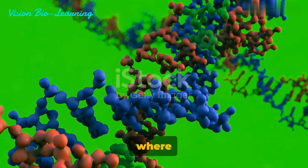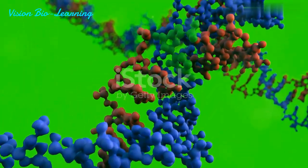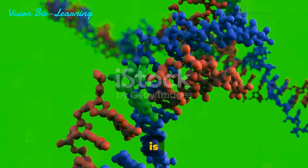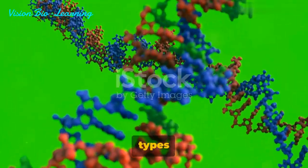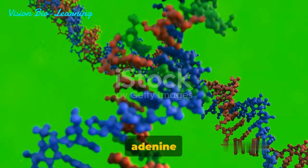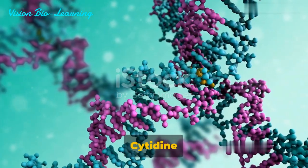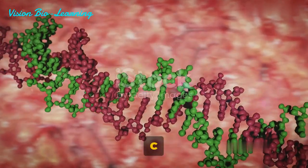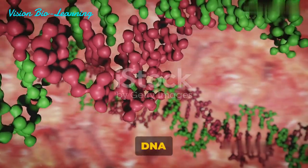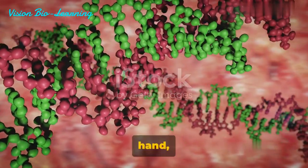Here's where the magic of base editing truly begins. Fused to this dCas9 is a bacterial enzyme, a DNA deaminase. There are two types of these enzymes: cytidine deaminases and adenine deaminases. Cytidine deaminases, which are naturally occurring in bacteria, induce C-to-T substitutions in the DNA sequence.